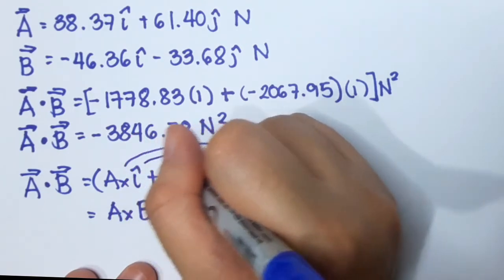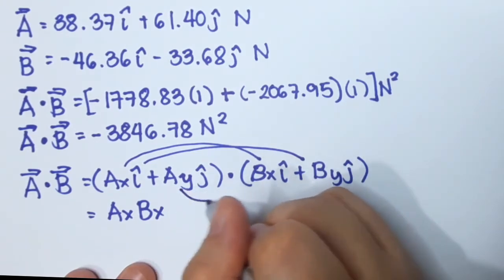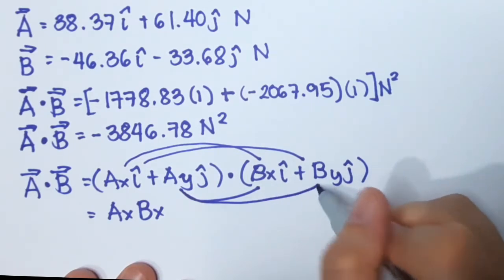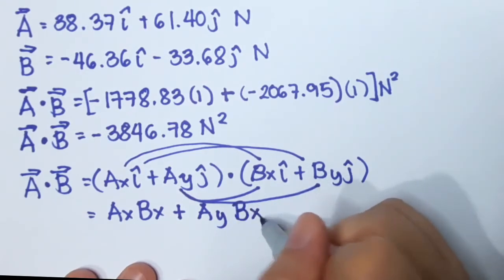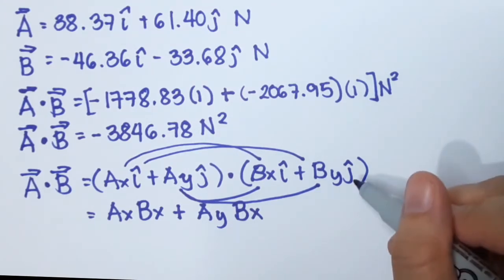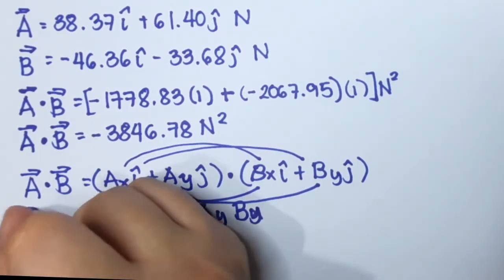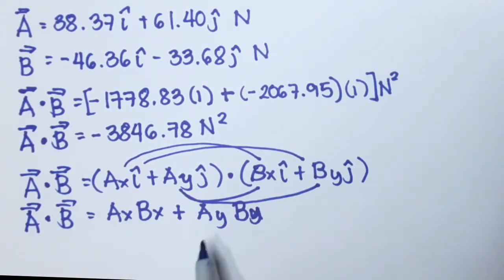The cross terms — ax times by with i dot j, and ay times bx with j dot i — both equal zero and drop out. The remaining term is ay times by, and since j dot j equals one, that term is also kept. So the general result is: a dot b equals ax·bx plus ay·by. It is simply the product of the components that share the same direction.